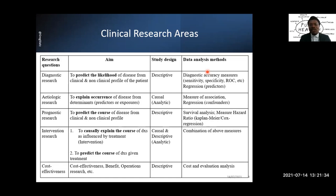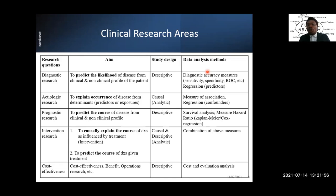In etiologic research, we are interested in measuring association — the association between the exposure and the disease outcome. The measures of association will be covered as we go forward. If we carry out a regression analysis here, the regression is not focused on how many predictors are needed for a diagnosis. Here, it is interested in controlling for confounding variables — another term we will explain in subsequent lecture series. This is the basic difference: regression must be driven by intent, determined by the area of clinical research.